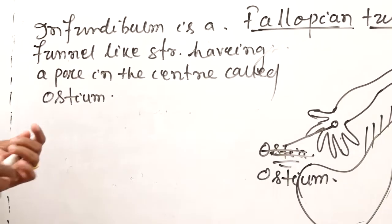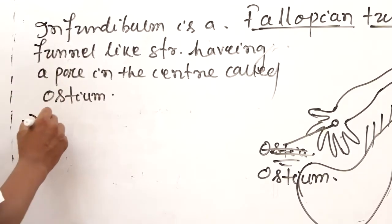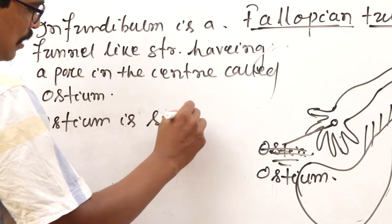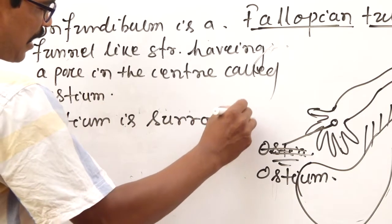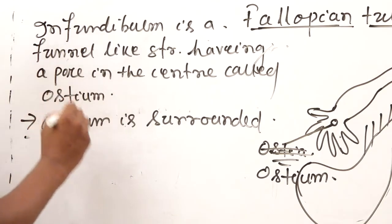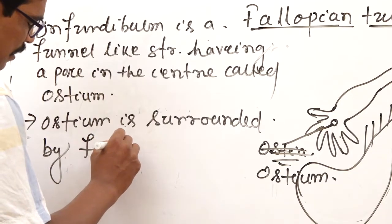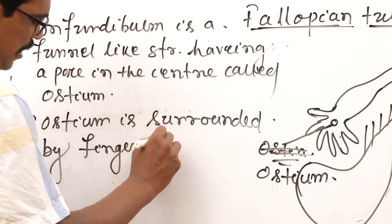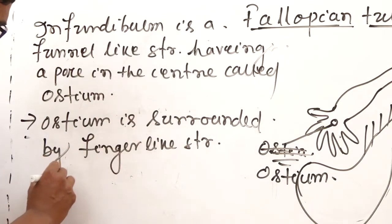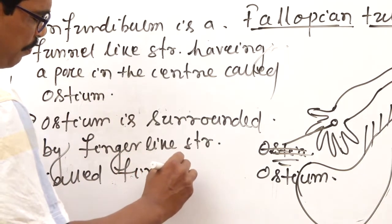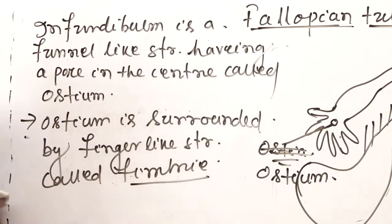The ostium is surrounded by finger-like structures called fimbriae.